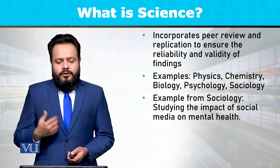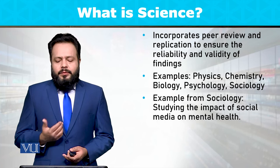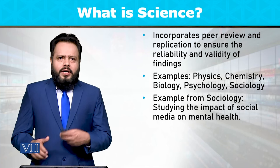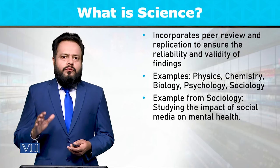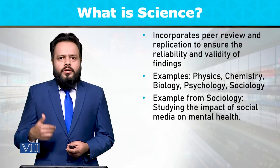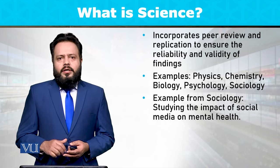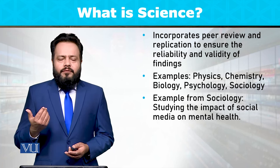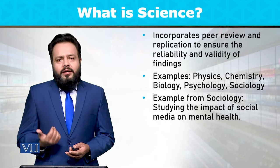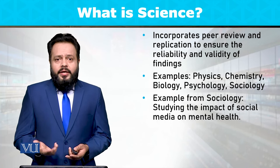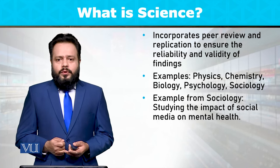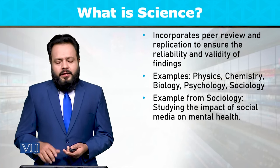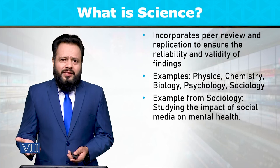Science incorporates peer review and replication to ensure the reliability and validity of findings. When we look at other approaches to knowledge, we find that the principle of verificationism may not be present in them. Scientific knowledge is based on falsification and verificationism, and its credibility rests on the ability to test and validate findings repeatedly.